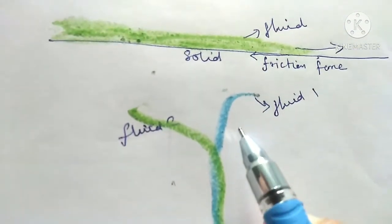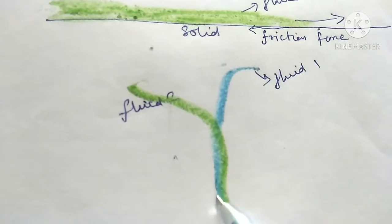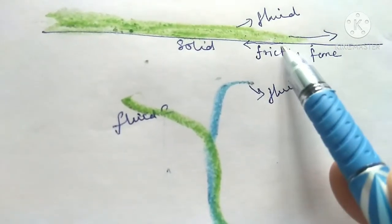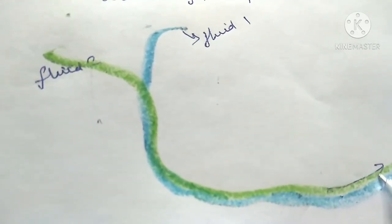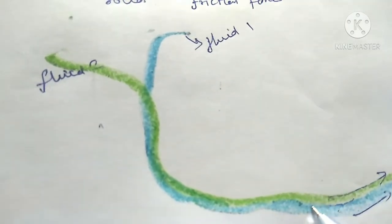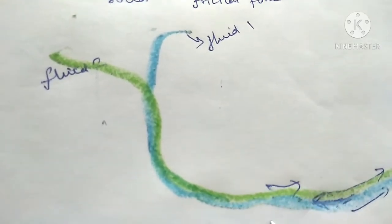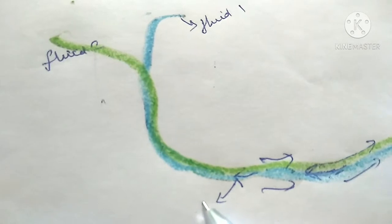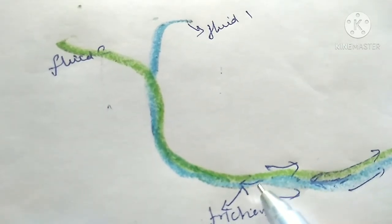Now we have two fluids — fluid one and fluid two. There is a friction force acting in the opposite direction to the fluid motion. That force is called friction force. The friction force acts between the layers of the two different liquids.